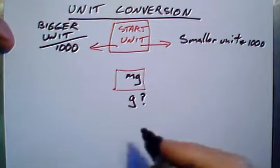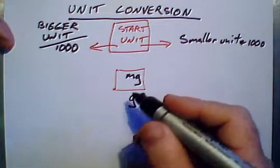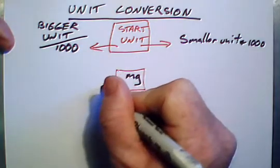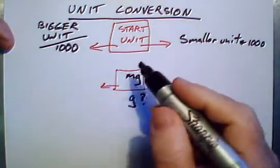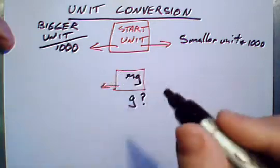Is it bigger or smaller? Well, a gram is 1,000 times bigger than a milligram. So we're going to be going to the left. If we're going to the left, to get the bigger unit, you divide by 1,000.